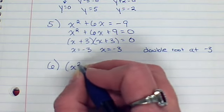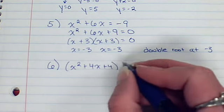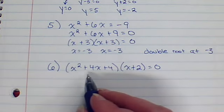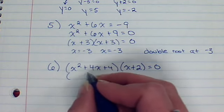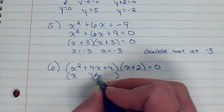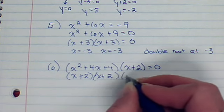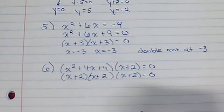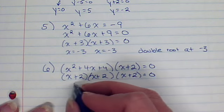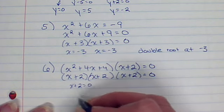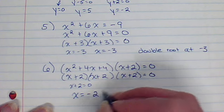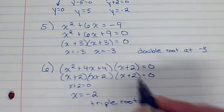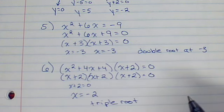Let's try another one. x squared plus 4x plus 4 times x plus 2 equals 0. Ooh, we need to factor that. Oh, special pattern. x and x plus 2 plus 2. Ooh, this time I have it 3 times. And if I set that equal to 0, I'll get x equals negative 2. And that is a triple root. Because we have 3 factors that all give us the same answer.